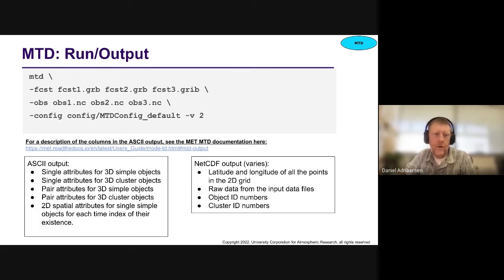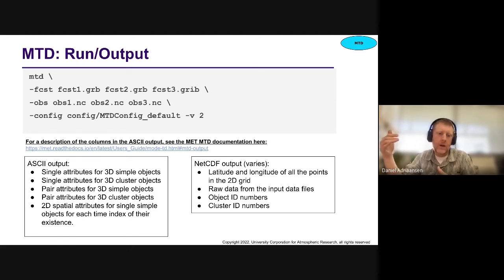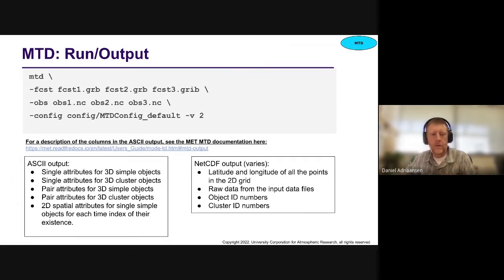Here's an example of running it. I just have three arbitrary forecast files and three arbitrary observation files paired up with my config file. And then a list of the types of outputs that come out of MTD. I'm not going to go through all of them here for time purposes — I've included a link because the MET user guide has a fantastic tabular presentation of the column names and what each column means in the ASCII output from MTD. I would refer all of you to that resource to get familiar with the types of things MTD produces in the output, which are a lot of things having to do with the attributes of objects.